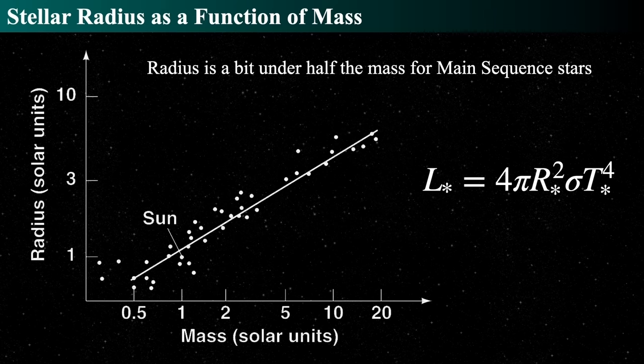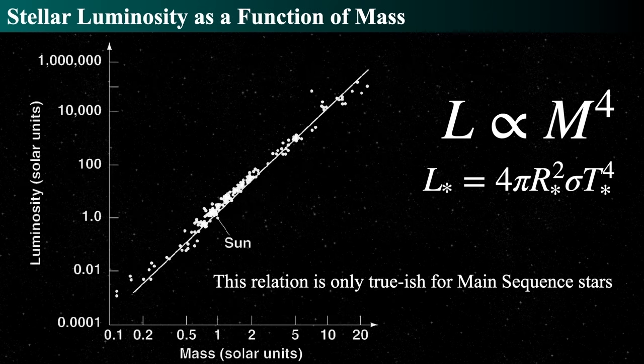The radius ranges from about 1 to 10 solar radii, and the mass varies similarly — roughly between about 10% and 20 times the mass of the sun. But if we look at luminosity, it's really not the same. If the radius doesn't vary very much but the luminosity does, there must be some relationship between the mass and the temperature of a star. And there is.